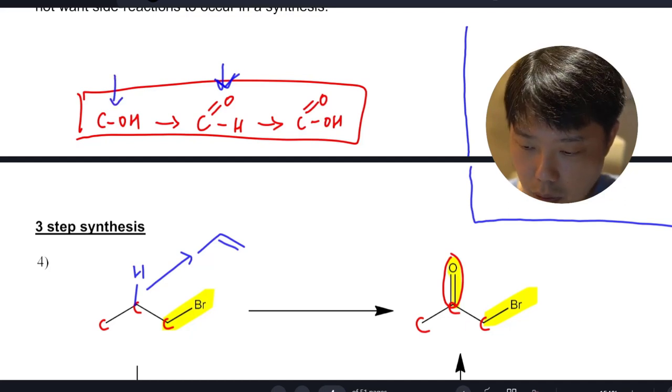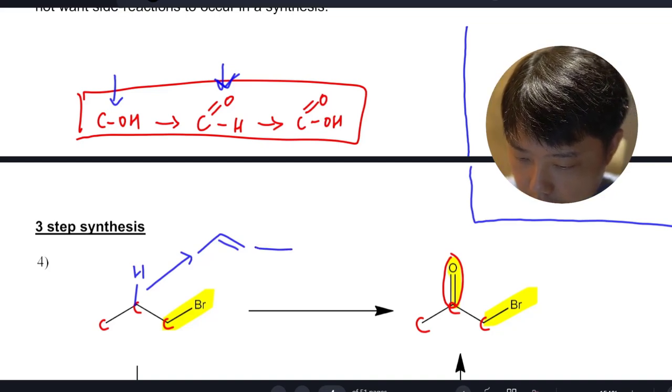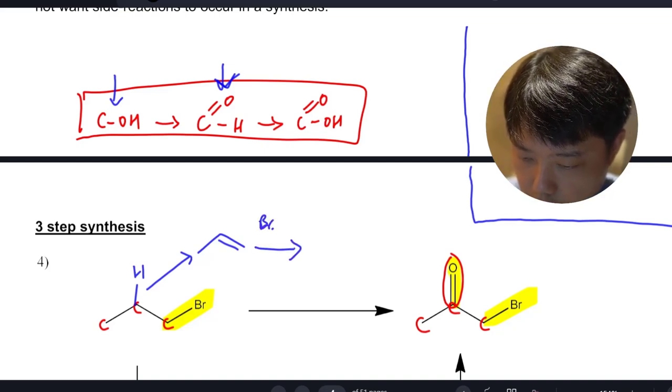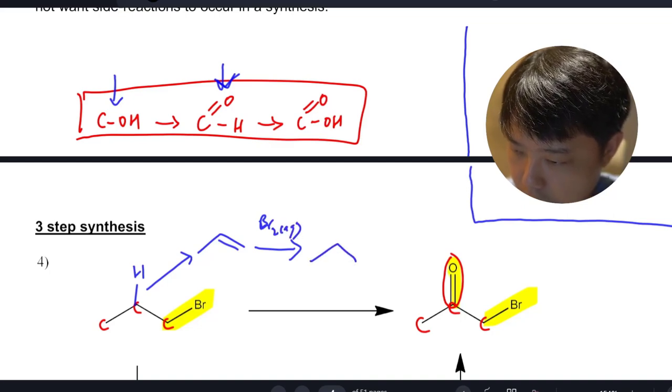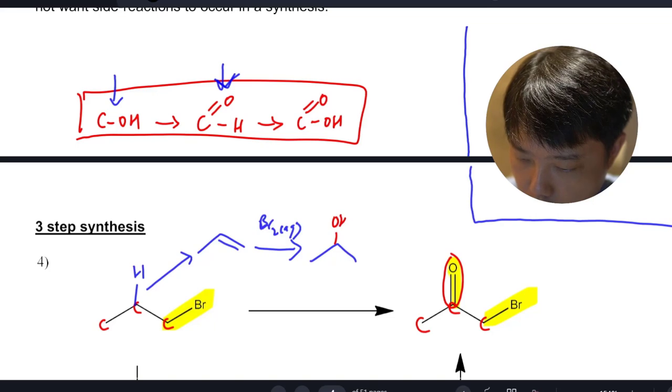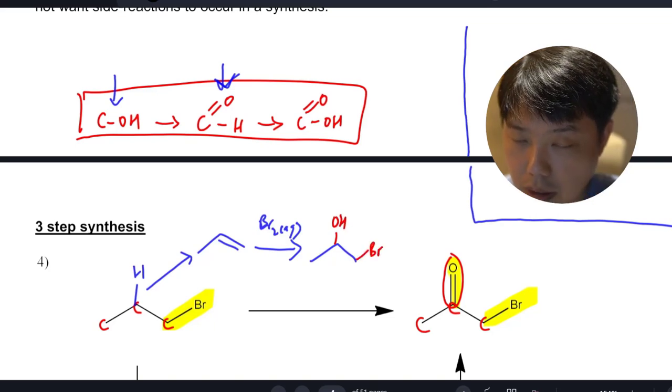We can do that quite easily when we add aqueous bromine. We'll add the OH to the more substituted position and the Br here. This follows the Markovnikov rule.